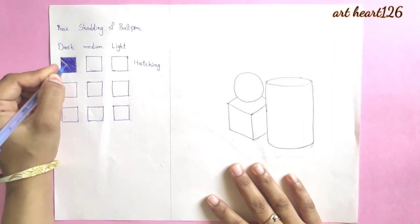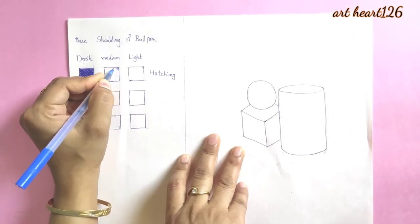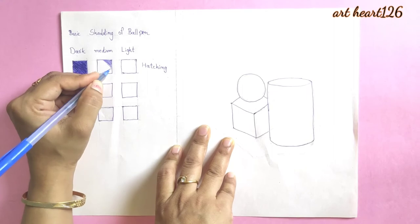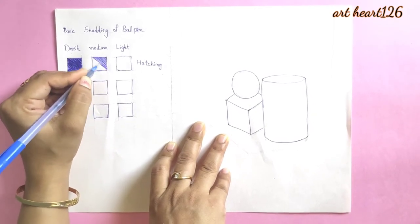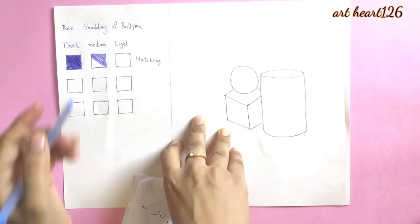Now I'll be showing you medium tone. Give medium pressure and do cross lines as shown. Gently rub the ballpoint pen with tissue paper, otherwise your picture won't look good. Work slowly.